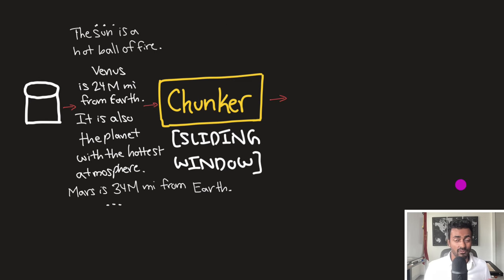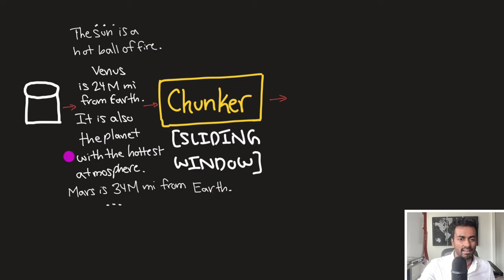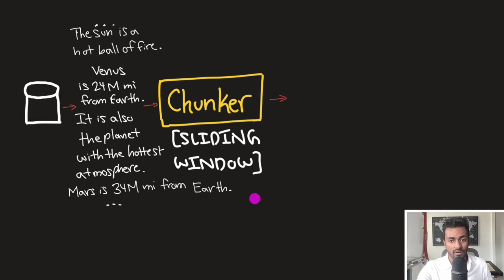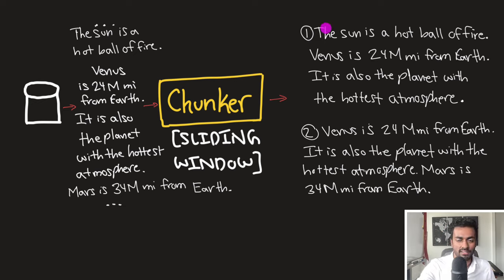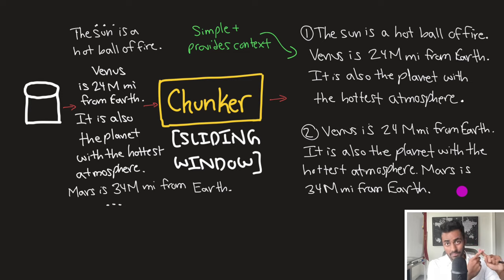Another chunking strategy is the sliding window approach. Adding a sentence before and after the input — for example, 'The sun is a hot ball of fire' before, and 'Mars is 34 million miles from Earth' after — gives us four sentences total. With a sliding window approach, we take each sentence along with the sentence before and after it to provide full context. So the first chunk has sentences one, two, and three; the second chunk has sentences two, three, and four. This is a simple strategy that also provides the relevant context needed.